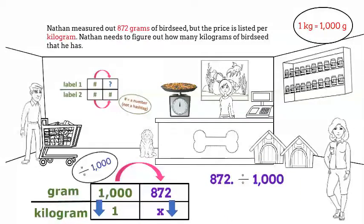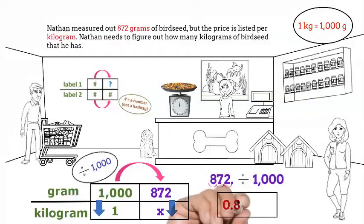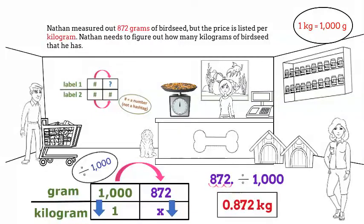To divide by 1,000, simply move the decimal point three places to the left. 872 grams equals 0.872 kilograms.